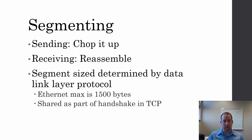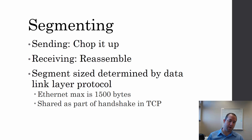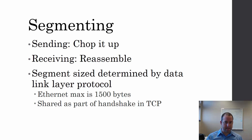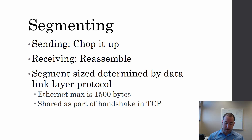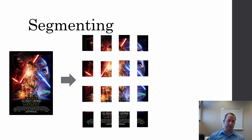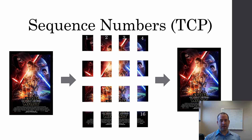Your transport layer protocol is going to take the data from the application — whether it's a file, a movie, an email, or a video stream — and chop it up into pieces to send across the network. It goes down through the layers, gets sent across the network, goes back up through the layers, and on the receiving end it's put back together. Segmenting looks like taking one large image and splitting it up into a bunch of smaller pieces, then putting it back together on the receiving end.